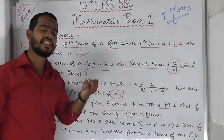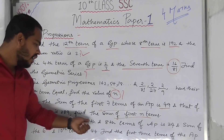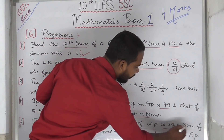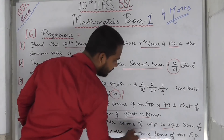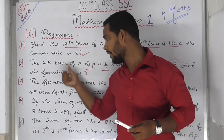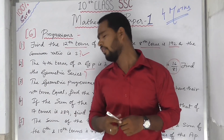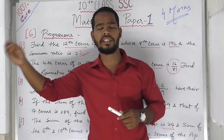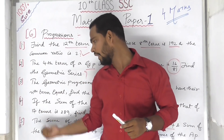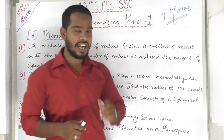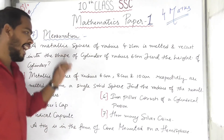These are the important model questions for progressions covering both GP and AP. The last chapter in paper 1 is mensuration — chapter 9. You must learn all the formulas for mensuration carefully.